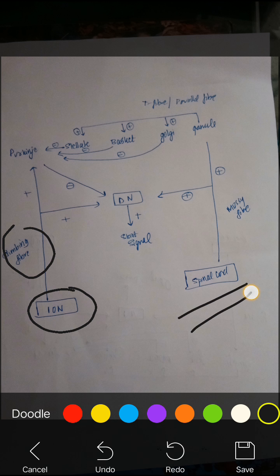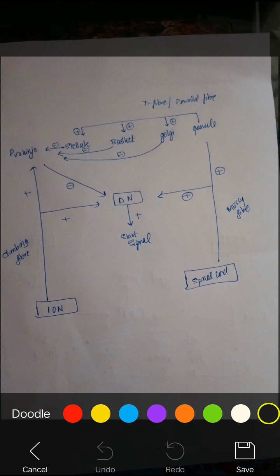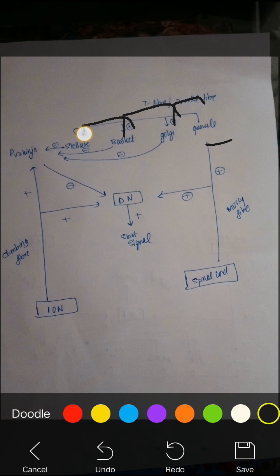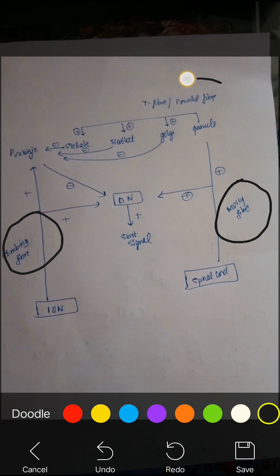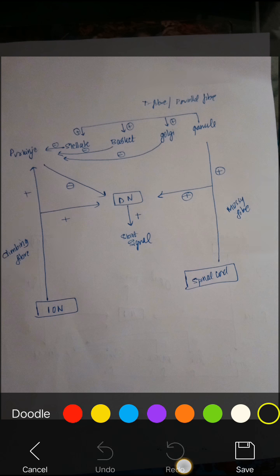The first input coming from the inferior olivary nucleus is called climbing fibers. The second input coming from the spinal cord via the spinal cerebellar tract is called mossy fibers. The output from the granule cell is arranged in a parallel manner, looking like the letter T, so it's called T fibers or parallel fibers.